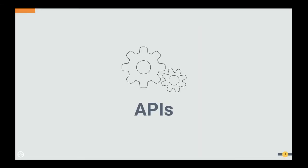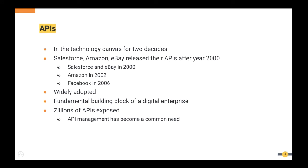We are here today because of API management, and API management is needed because of APIs. I'll do a very quick recap on APIs. APIs have been in the technology canvas for nearly or more than two decades. Big players like Salesforce, Amazon, and eBay released their public APIs after the year 2000 — Salesforce and eBay in 2000, Amazon in 2002, and Facebook in 2006.